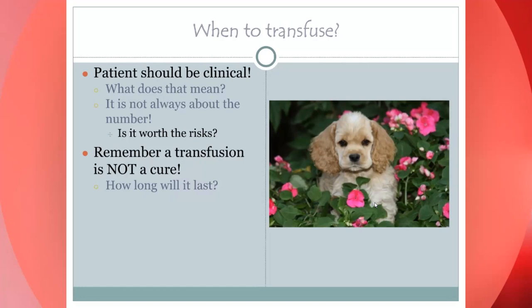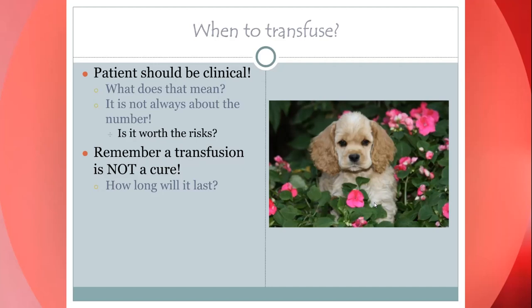Cocker spaniels and white fluffy dogs are commonly known for needing blood transfusions because they're prone to IMHA — immune-mediated hemolytic anemia.